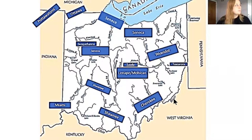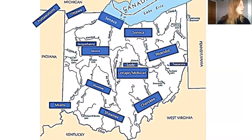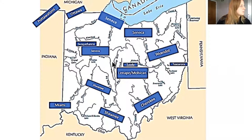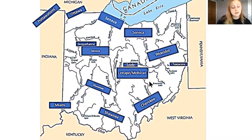So here is a map of the different tribes of people who lived here before we did. So we have the Cherokee people, the Seneca, the Mohican, the Shawnee, the Miami, the Wyandotte. We have a whole bunch of different tribes here in Ohio and there were more than this too - these are just the major ones. And as you can see where it says Mohican in the middle here, that is kind of where we live. So it's kind of cool to know which tribes lived here before we did.